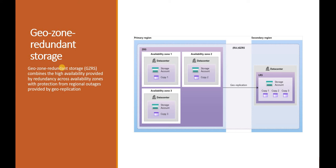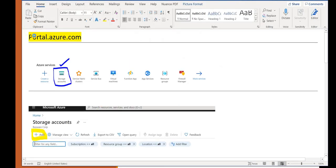Geo Zone Redundant Storage (GZRS) is a combination of ZRS and LRS. In the primary region, it copies data across three different zones using three different storage accounts. Simultaneously, it asynchronously copies the data to the secondary location — around a hundred miles away — using LRS structure in a different data center, keeping replicas in three different locations. This is the complete structure for managing data recovery using Azure's primary and secondary region storage schemes.